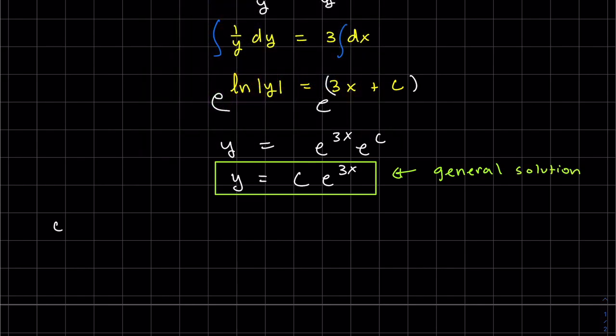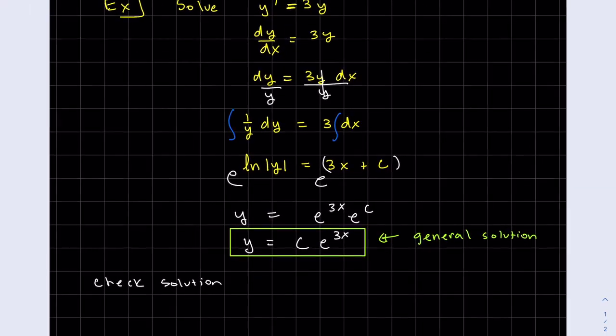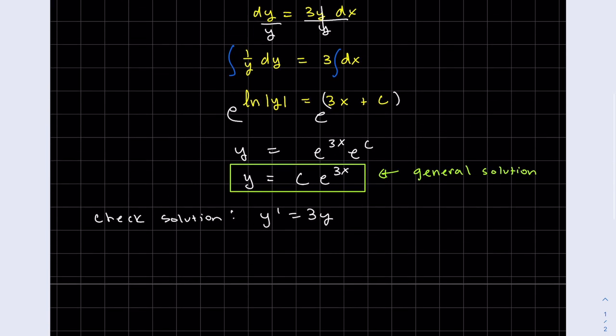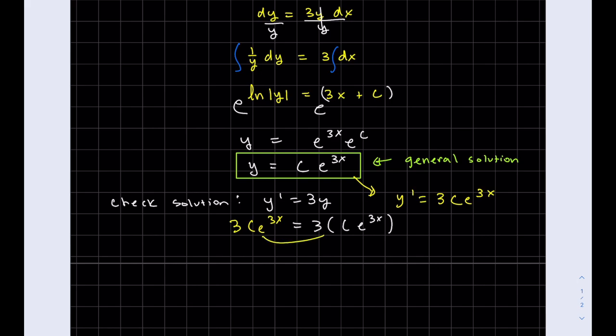And we can always check our solution. The original equation was y prime equals 3y. So if we want to plug that in, we replace y with what we got. But we also need to plug in y prime. So we would need to find y prime. And we can see it is equal, therefore true, therefore a solution. It checks out.